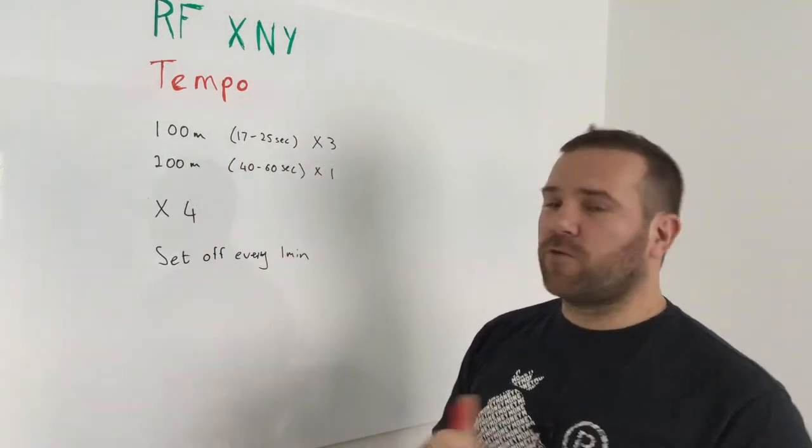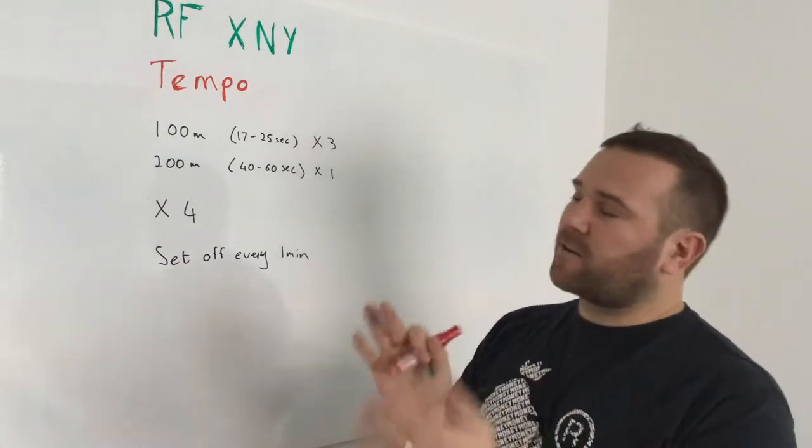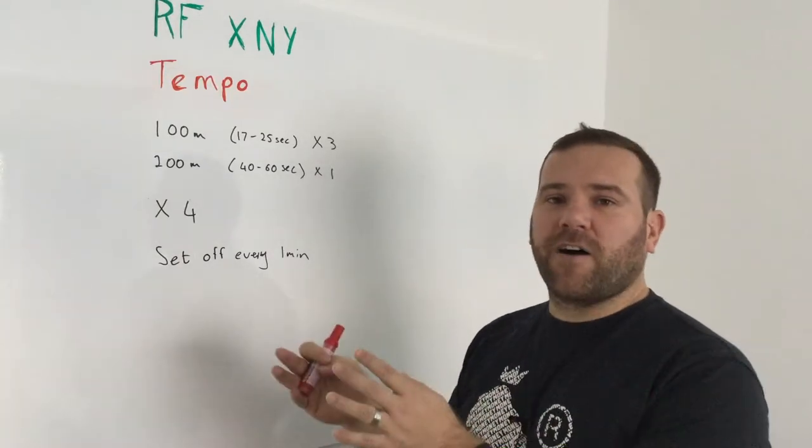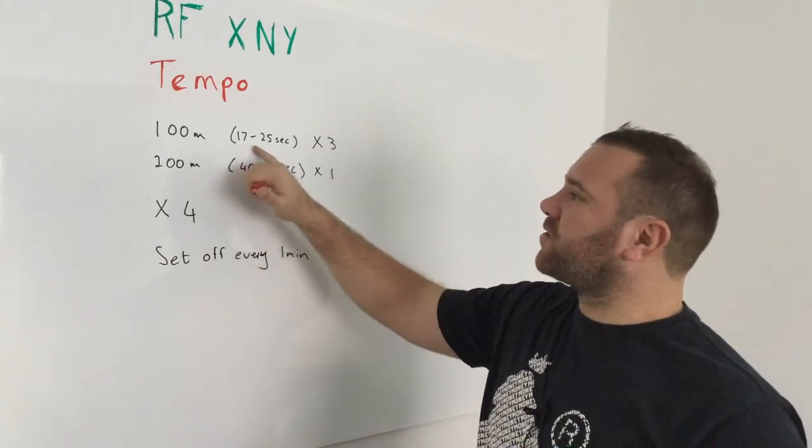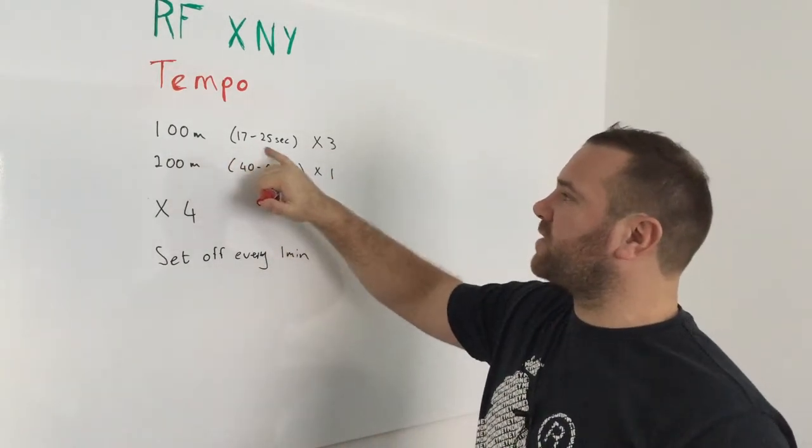For the wingers and full backs, closer to the 17 seconds. Tight 5, closer to the 25 second mark. That is your target to run the 100 metres in.